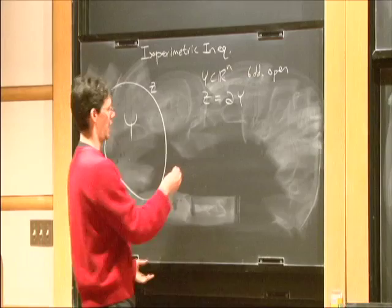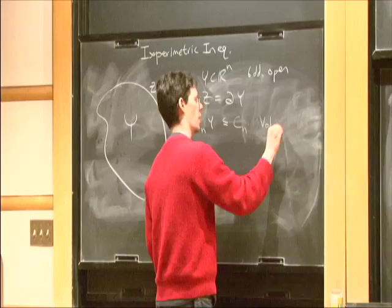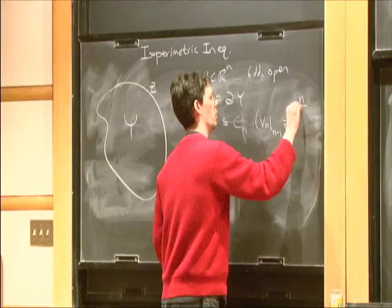That's made more precise in an inequality. It says that the volume of Y, the n-dimensional volume of Y, is bounded by a constant times the n-1 dimensional volume of the boundary raised to an appropriate power, n over n-1.